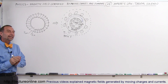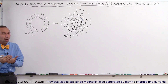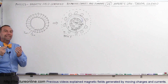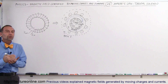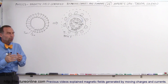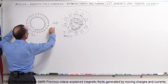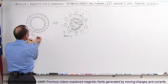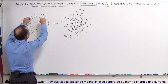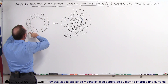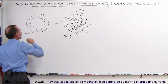Welcome to ElectronLine. In this video we're going to show you how to use Ampere's law to find the magnetic field inside what we call a toroidal solenoid or toroidal coil. It is simply a coil that has wire run around it, and then the coil is bent into a circular shape so that the wire goes all the way around from one end to the other.